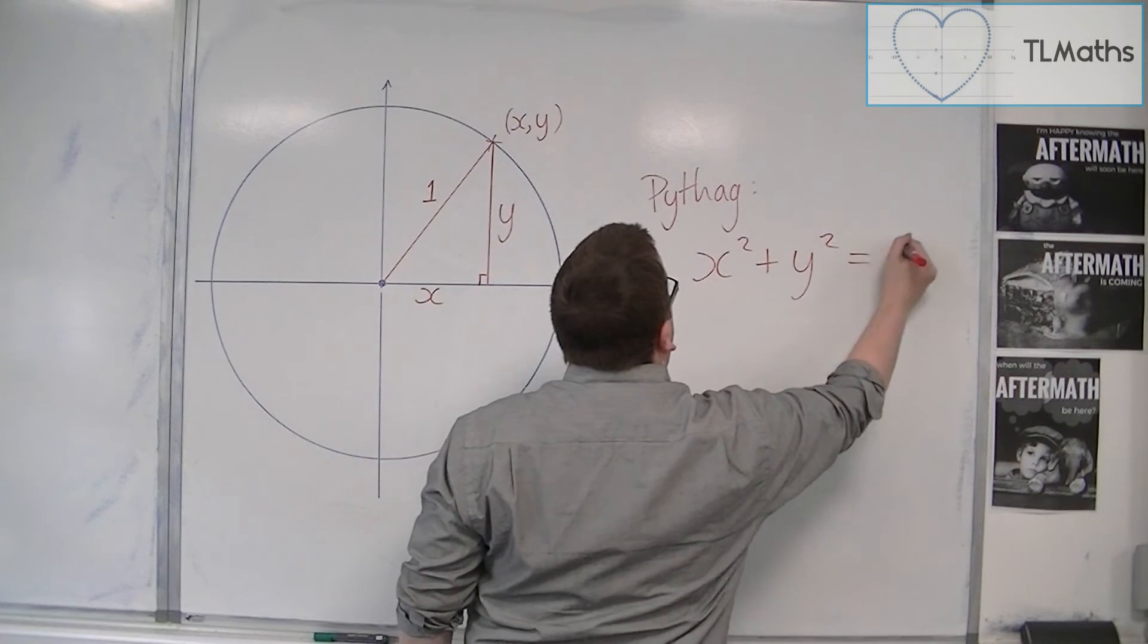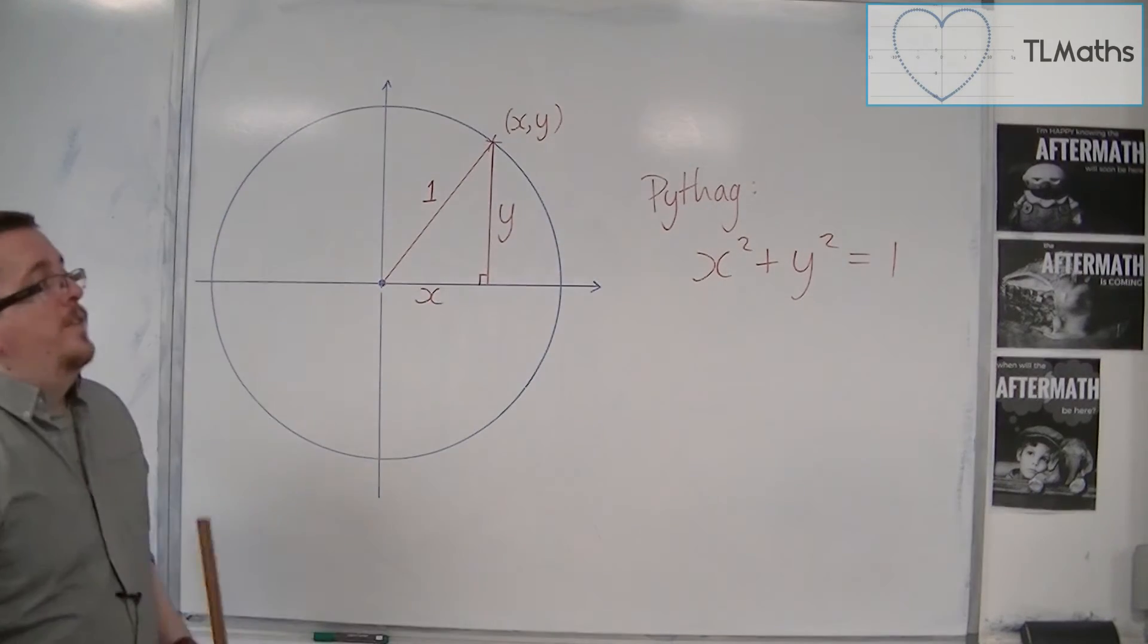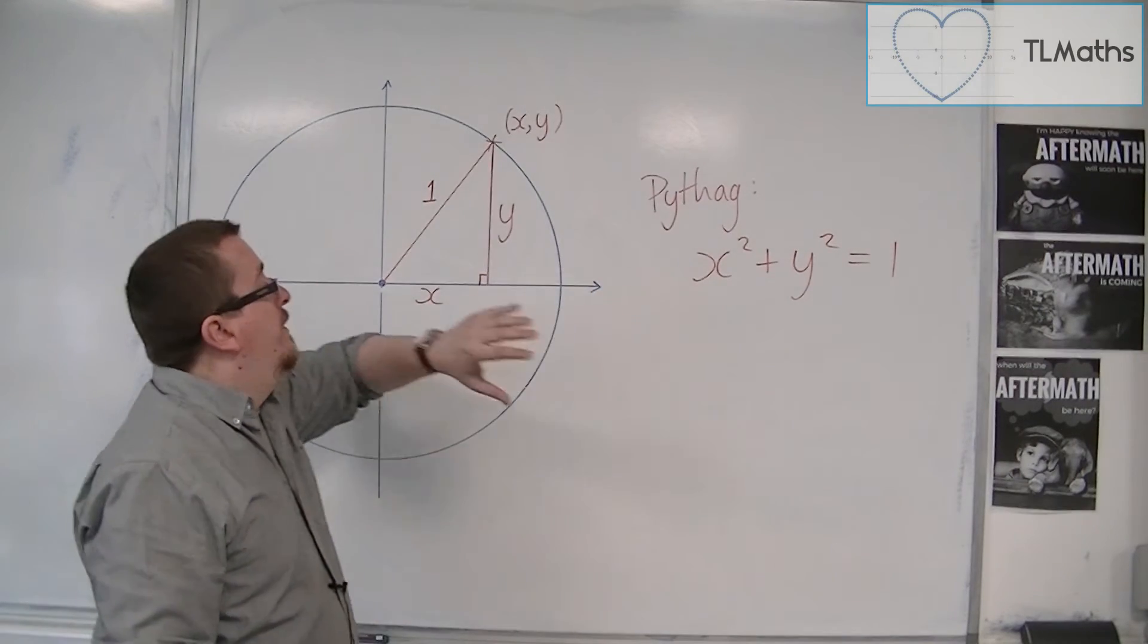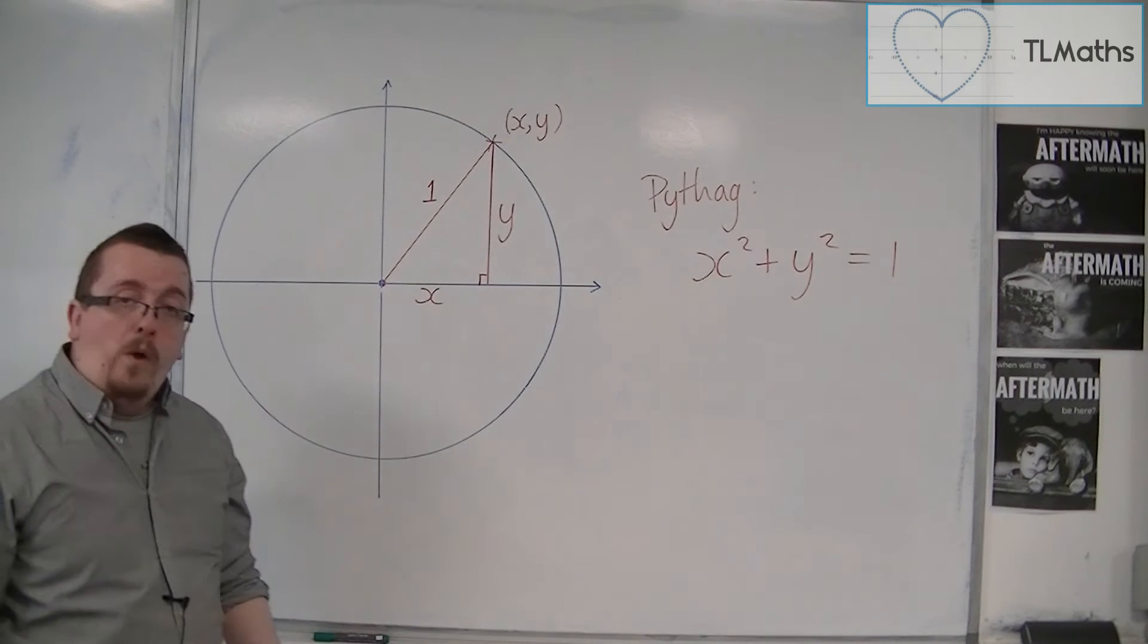And this identifies the equation of this circle, a circle that is centered at (0, 0) and of radius 1.